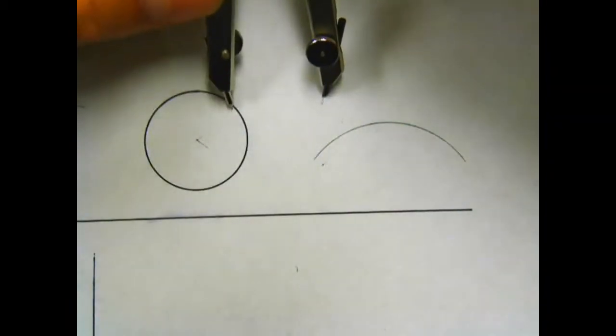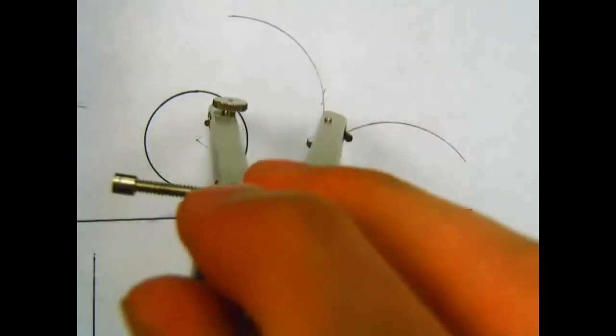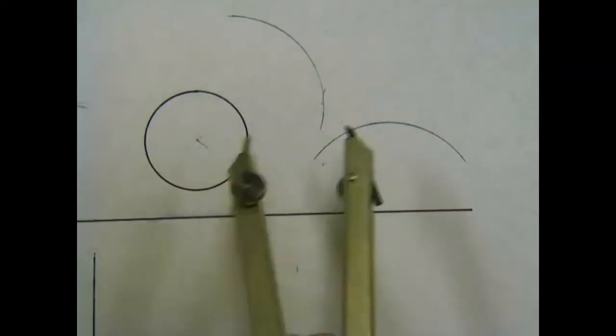And then we're going to do the same thing for our circle. We're going to find a point on our circle and swing an arc to expose a high point.